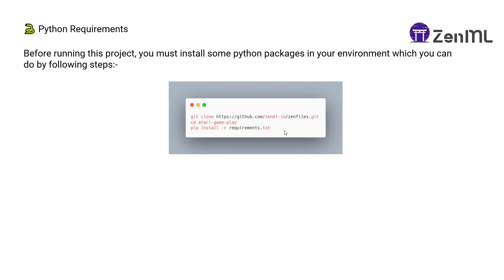We have already made a project for you. Before running this project you must install some Python packages in your environment — we suggest you make a virtual environment, which you can do using Conda or pip. You can follow these steps: clone the particular repo of ZenML files, go to the directory Atari gameplay, and then install all the packages required for this project.